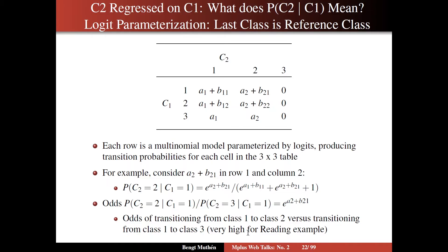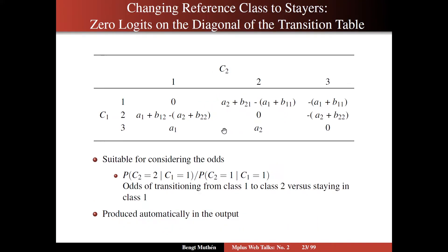This is, after all, kindergarten going from fall to spring of kindergarten. In other cases, it may be more of interest to compare not to the last class, but to the class that corresponds to staying in the same class — that is, the diagonal: one-one, two-two, three-three. You can do this by a change of reference class from the last class to the stayer class, the diagonal, so you have zero loaded on the diagonal of the transition table.